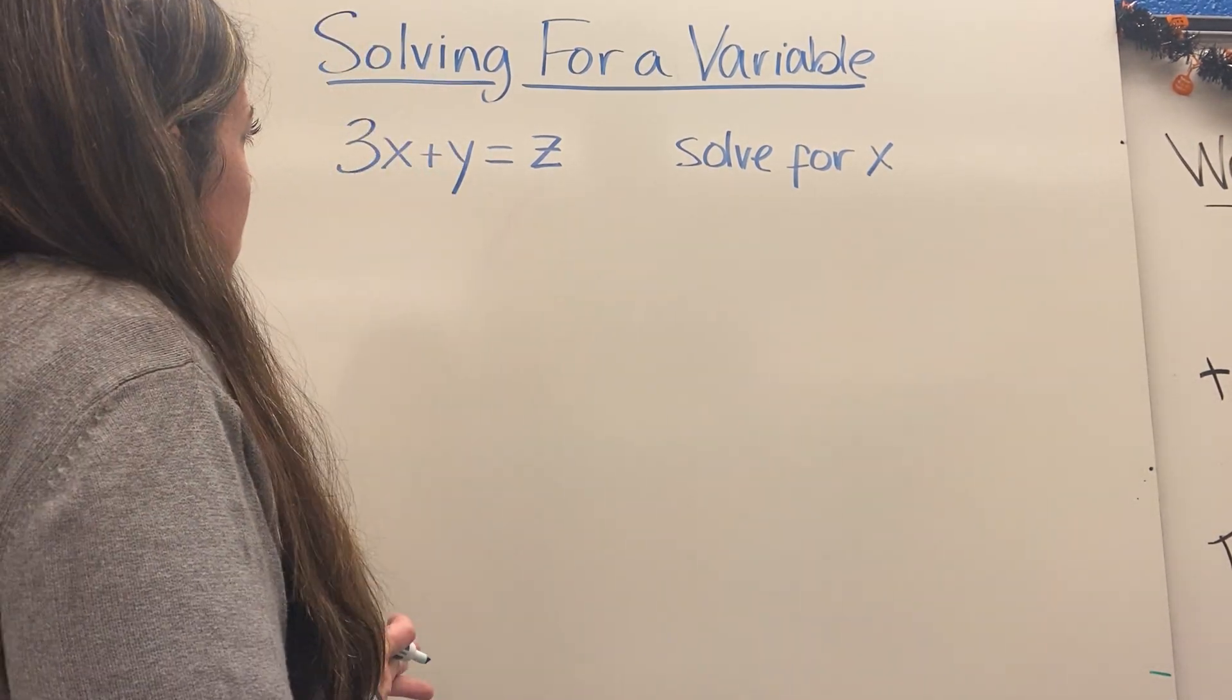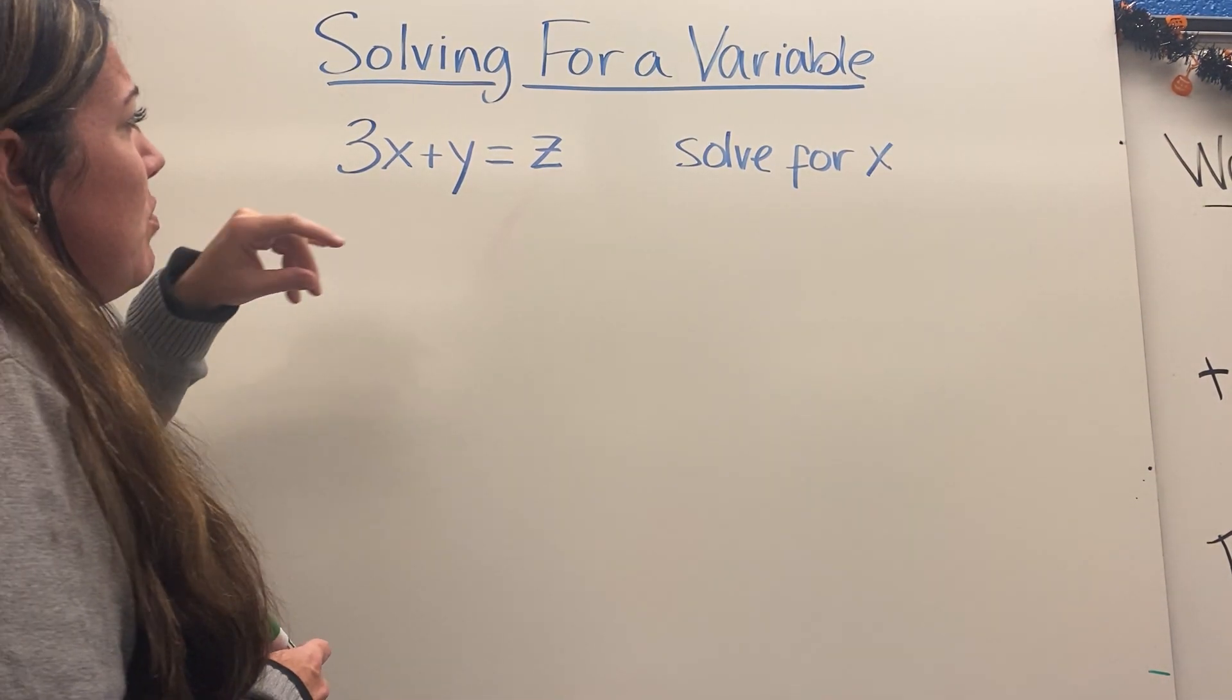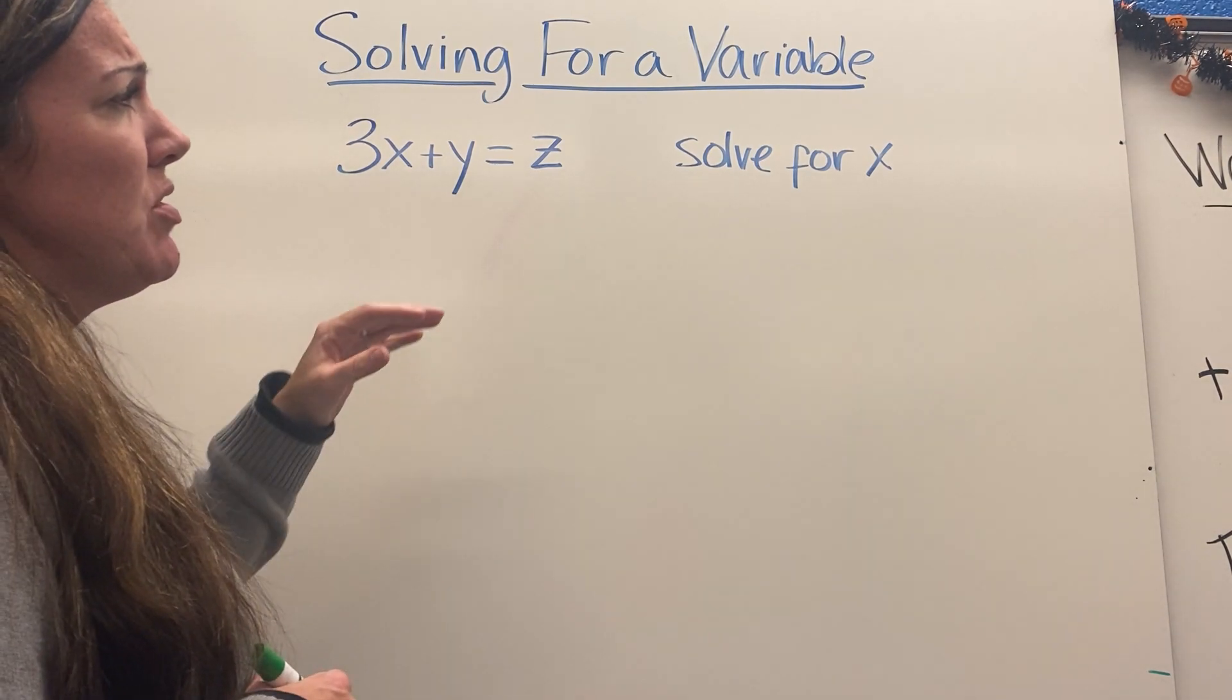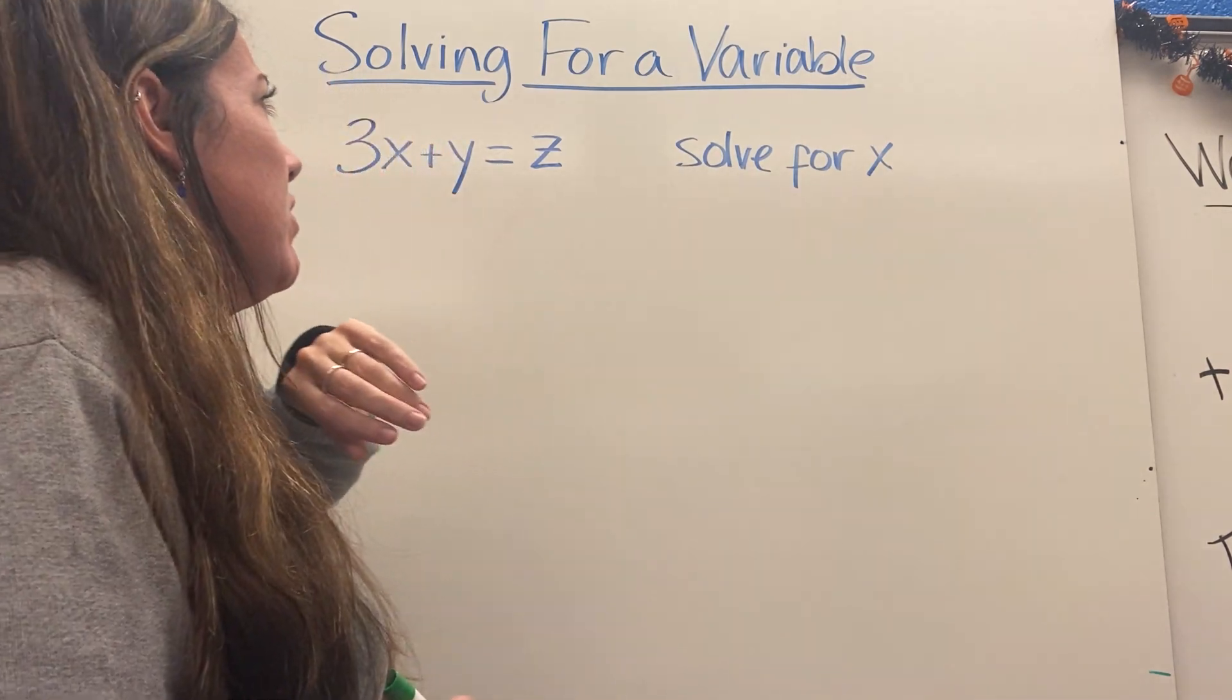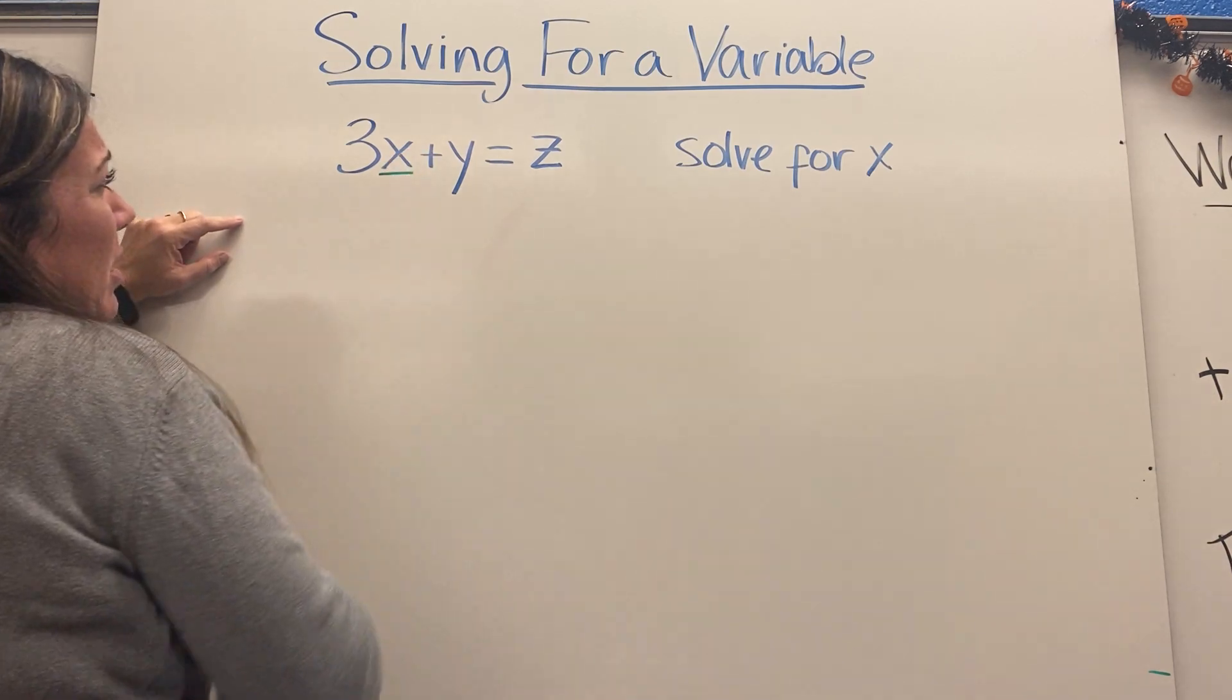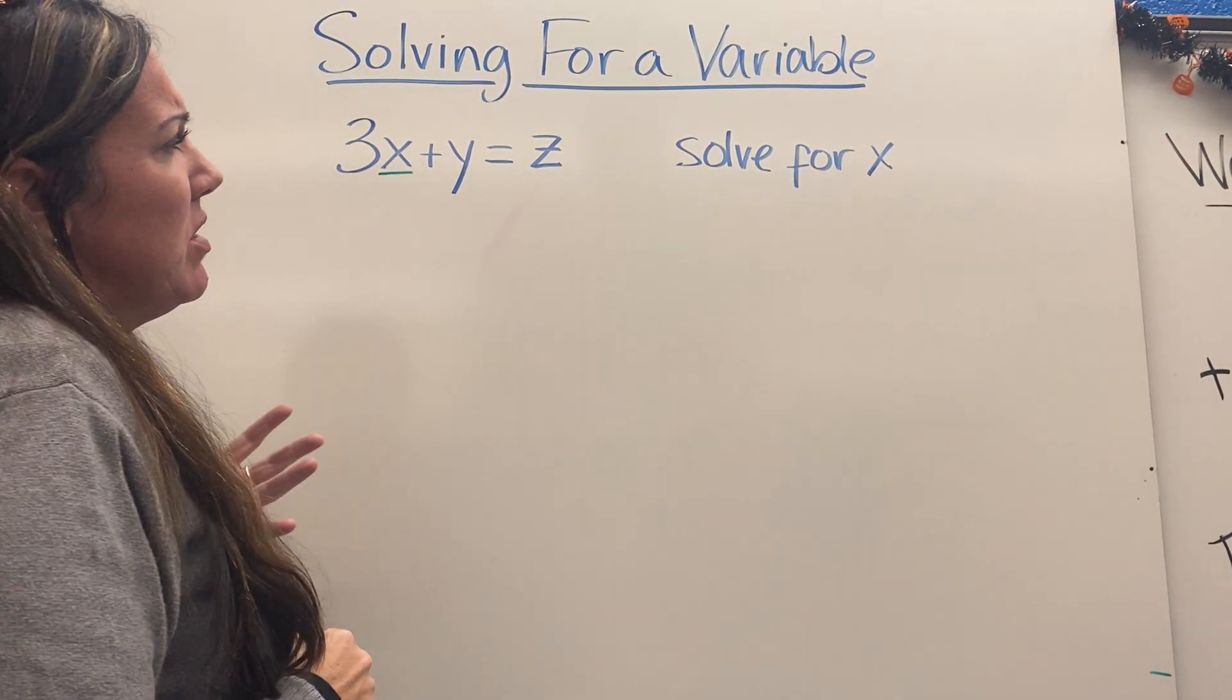Here we have an equation that says 3x plus y equals z, and the directions say that we want to solve for x. In other words, we want x to be by itself, so this is what I need to be alone.